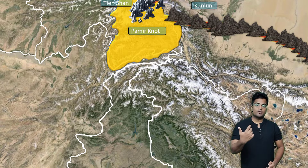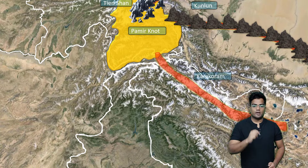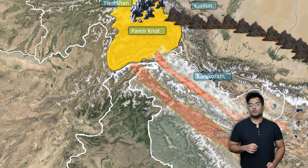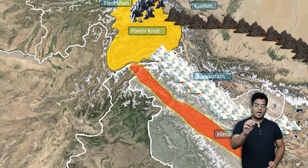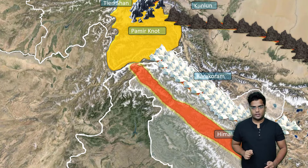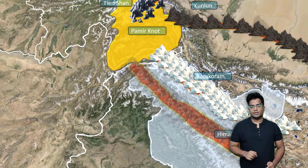Next, we have another mountain range which goes through India — that is the Karakoram range. And we definitely have the Himalayas, which also touch Pamirnaut. These are the Himalayas.